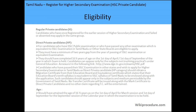The first topic is eligibility. Private candidates are divided into two types: regular private candidates, referred to as H, and direct private candidates, referred to as HB. If you have already appeared for the exam or registered and were absent for some reason, you are referred to as a regular private candidate (H). Those planning to sit for the higher secondary examination for the first time are referred to as direct private candidates (HB).